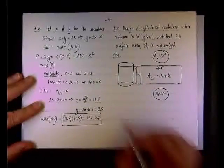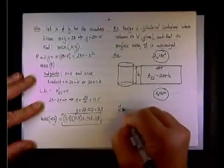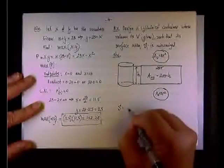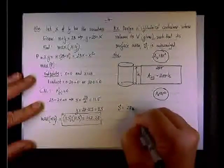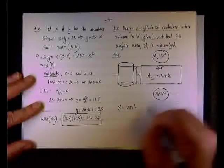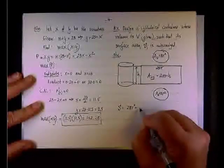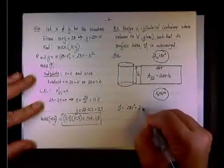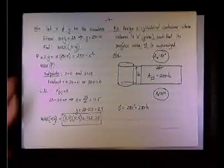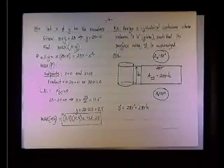So what is the surface area? The surface area is made of 2 times pi r squared plus 2 pi r h, like so. Now this is a function of r and h.